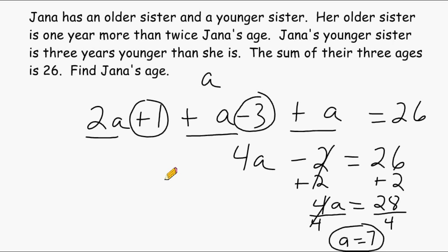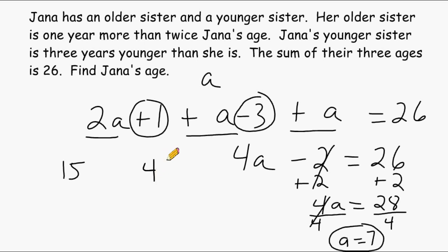Because Jana's older sister is one year more than twice Jana's age, we double seven to get fourteen and add one, giving us fifteen — her older sister is fifteen years old. Her younger sister is three years younger than Jana, so seven minus three gives us four. Jana's age is seven. Adding all three ages together: fifteen plus seven equals twenty-two, and twenty-two plus four is in fact twenty-six.